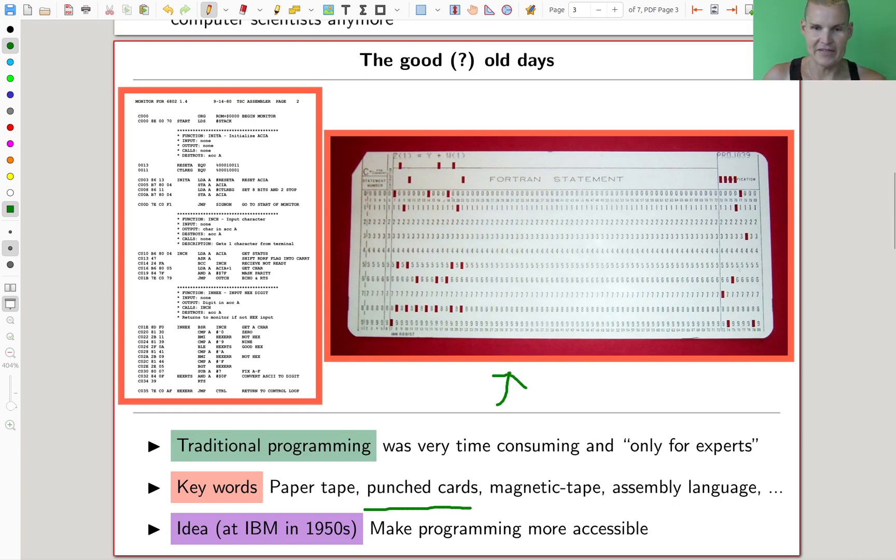But anyway, punched cards, paper tapes, magnetic tapes, or maybe a little bit more modern, those low-level languages. You really needed to be an expert to do anything. It was the good old times where you had no computer screen. There was no interaction between human and machine at all.